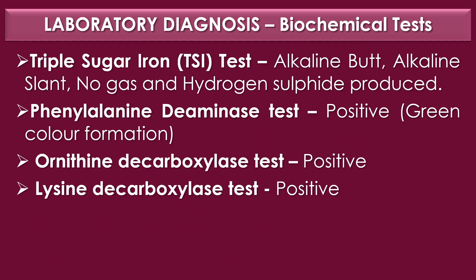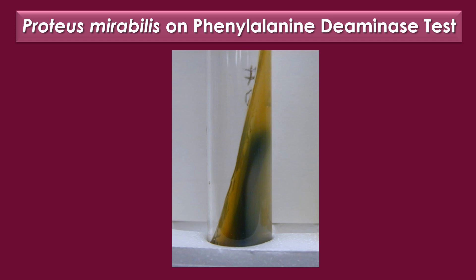The triple sugar iron test shows an alkaline slant, no gas formation, and hydrogen sulfide produced. The phenylalanine deaminase test is positive and shows green color formation. Ornithine decarboxylase test is positive and lysine decarboxylase test is positive. An image shows Proteus mirabilis on the phenylalanine deaminase test.